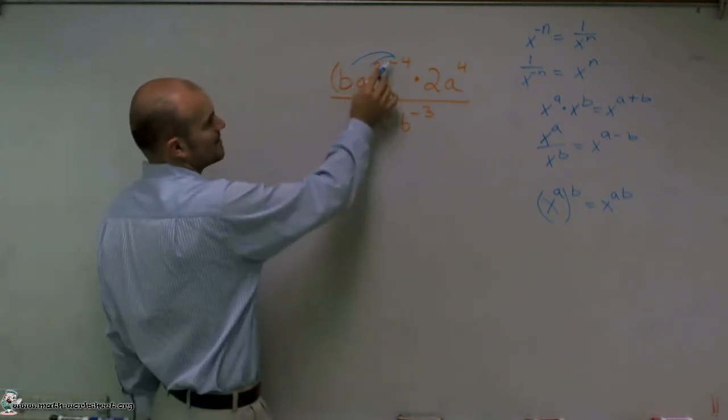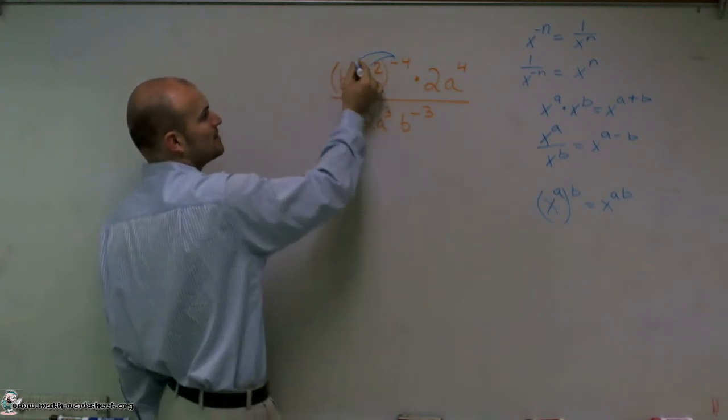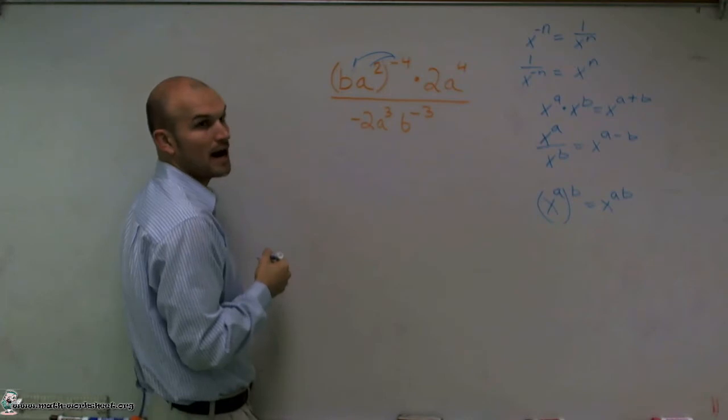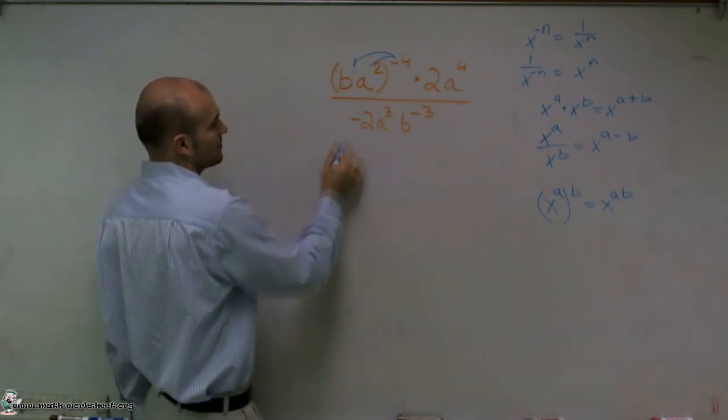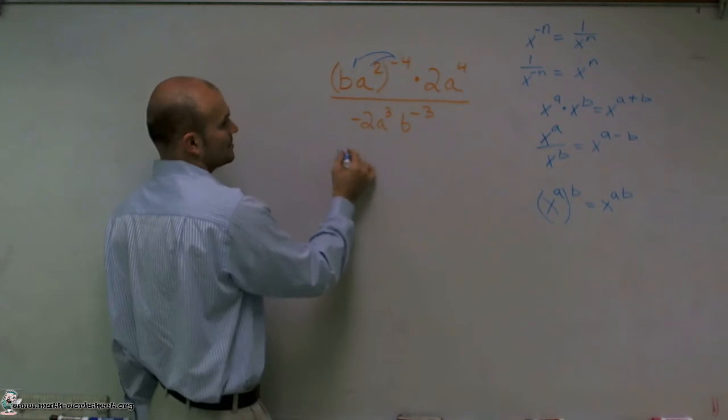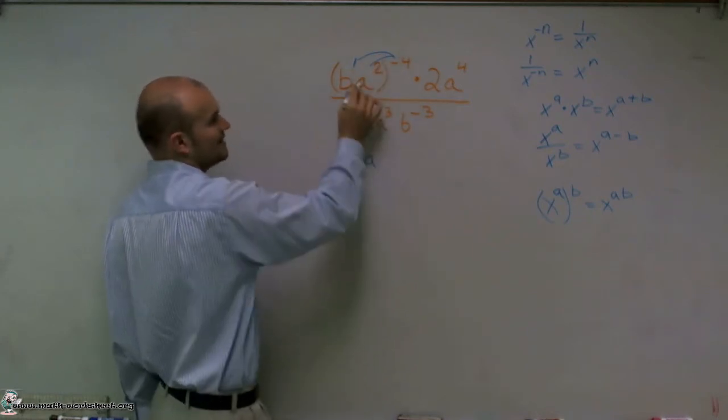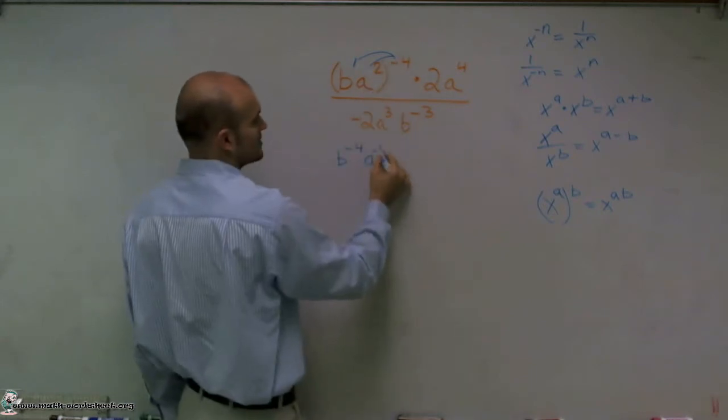So I have b raised to the negative fourth power, and a squared raised to the negative fourth power. Well, remember that b can be raised to the first power. So therefore, when actually multiplying this out, I'll have b to the negative fourth, because one times negative four is negative four. And then a to the two times negative four is negative eight.